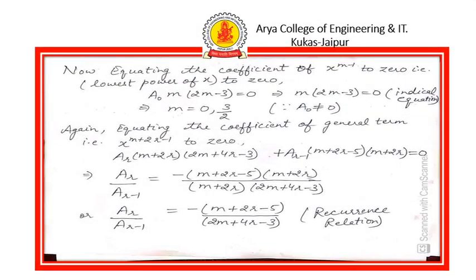Equating the coefficient of x to the power m minus 1 (the lowest power) to zero, we find a₀ m(2m minus 3) equals to 0. Since a₀ is not equal to 0 (explained later), we have the indicial equation m(2m minus 3) equals to 0, giving roots m equals to 0 and m equals to 3/2. Equating the coefficient of the general term x to the power m plus 2r minus 1 to zero gives the recurrence relation for a_r / a_{r-1}, where r goes from 1 to infinity.